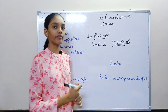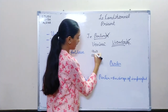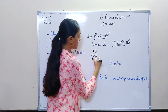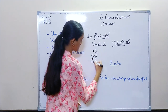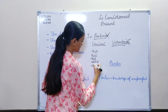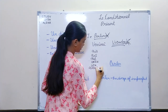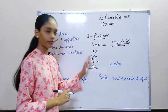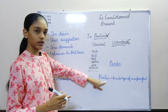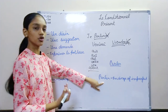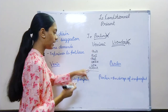So what are the endings of imparfait? They are: AIS, AIS, AIT, IONS, IEZ, and AIENT. These are the endings of imparfait. So you will write the infinitive form or the future simple form without the avoir endings, and then you will add these endings.